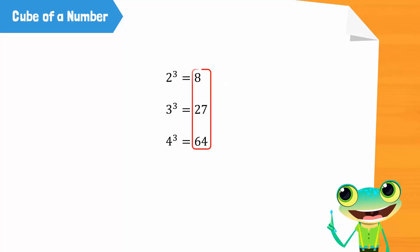All these numbers are called perfect cubes. Perfect cubes are numbers which are cubes of whole numbers. As you can see here, 8 is a perfect cube. It is a cube of 2 which is a whole number. 27 is also a perfect cube. It is a cube of 3.